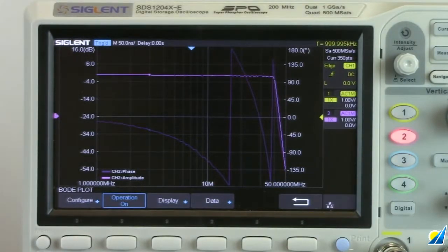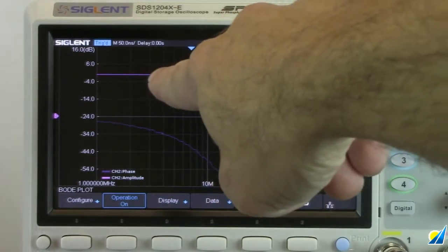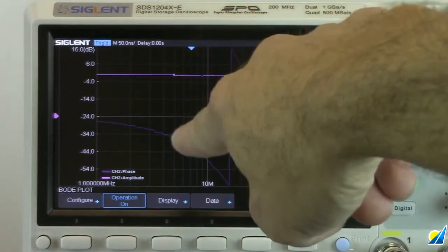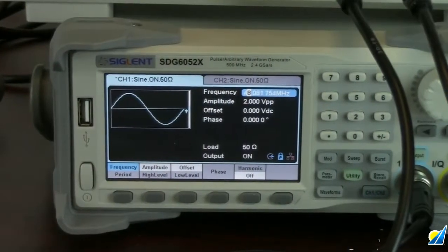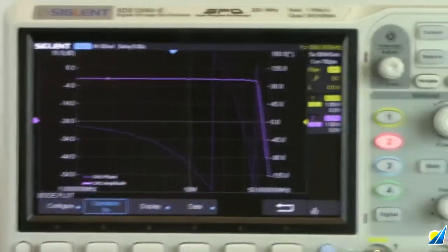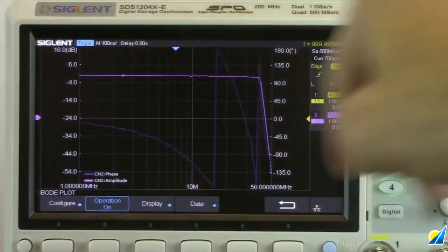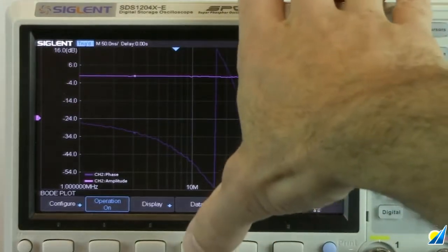You can see the progress point is actually shown by these two small points that are migrating across the display as we go to each frequency value. And the frequencies are rolling on the SDG. We have the nice bode plot. We can also take a closer look at the data.